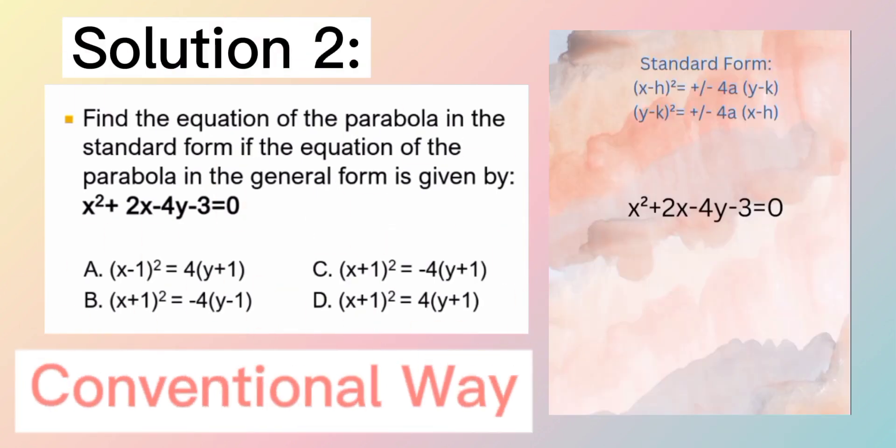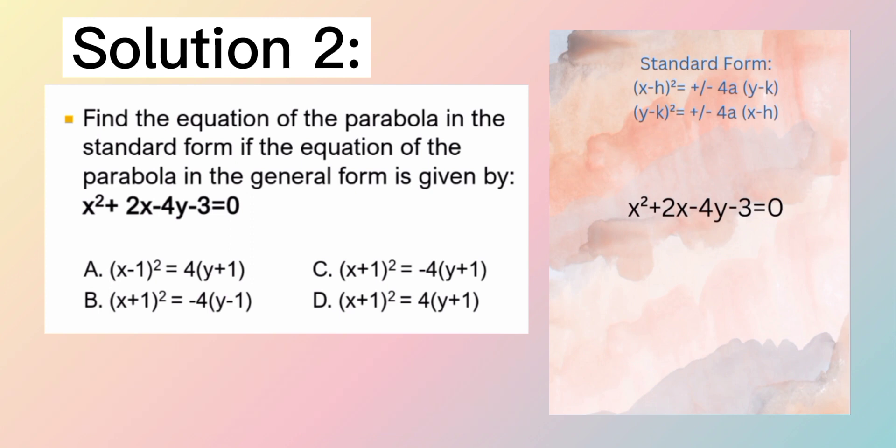The given general form of the parabola is x squared plus 2x minus 4y minus 3 is equal to 0. Kailan nga ba natin malalaman na parabola ang isang general form? Kapag either x or y ang naka-squared. Take note, either isa lang kina x or y ang naka-squared. Let's check. Yes, x squared lang. Si y ay walang squared. Therefore, it is a parabola.